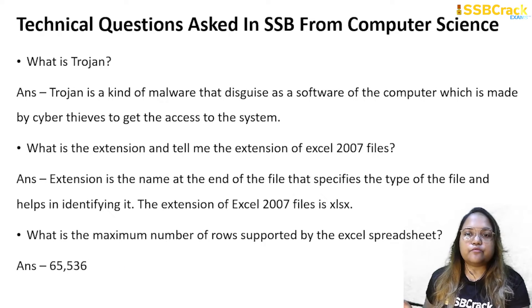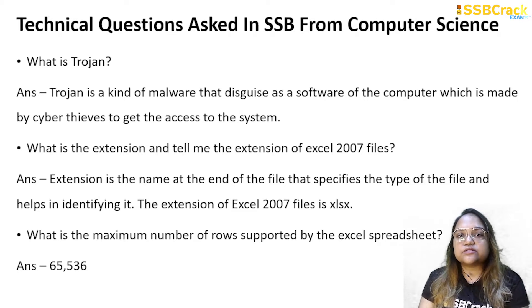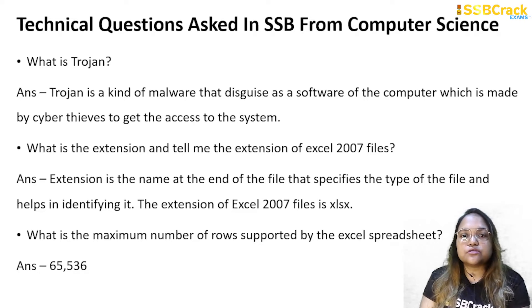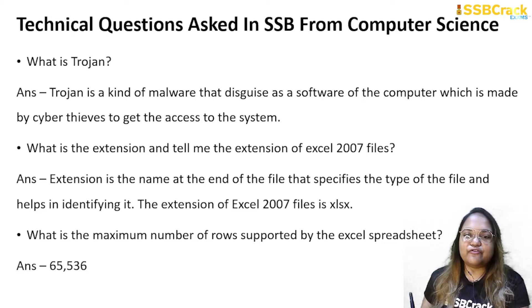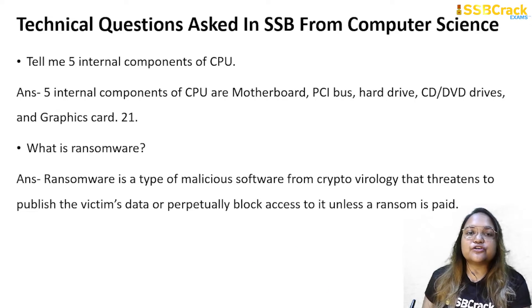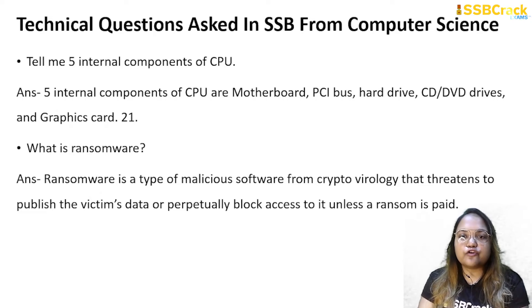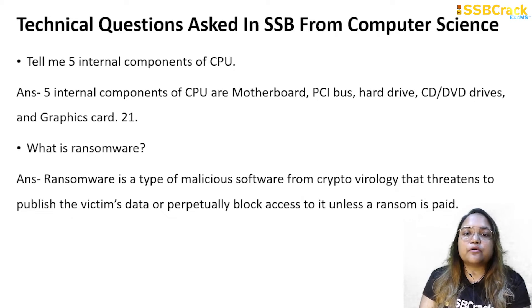What is a Trojan? Trojan is a kind of malware that disguises itself as software on your computer, made by cyber thieves to gain access to the system. What is a file extension, and tell me the extension of Excel 2007 files. Extension is the name at the end of a file that specifies its type and helps in identifying it. The extension of Excel 2007 files is XLSX. What is the maximum number of rows supported by an Excel spreadsheet? 65,536. Tell me five internal components of a CPU: motherboard, PCI bus, hard drive, CD or DVD drives and graphics card. What is ransomware? Ransomware is a type of malicious software from cryptovirology that threatens to publish the victim's data or perpetually block access to it unless a ransom is paid.